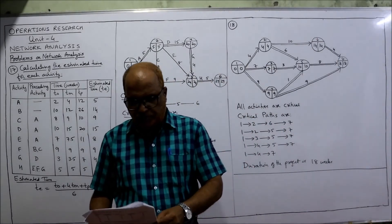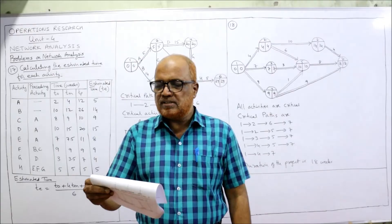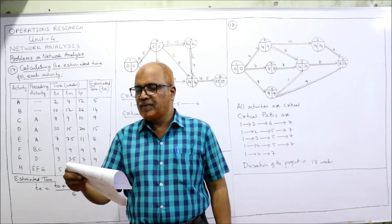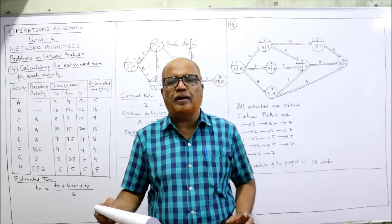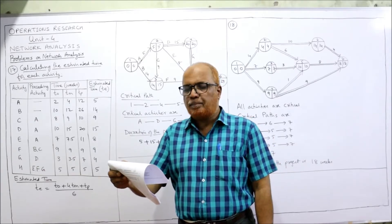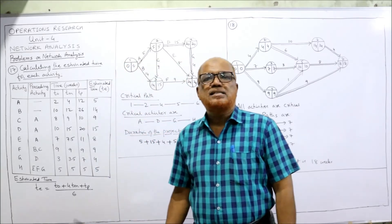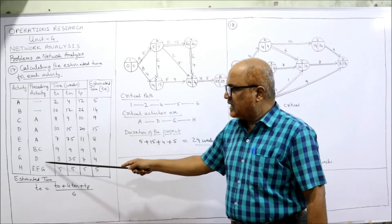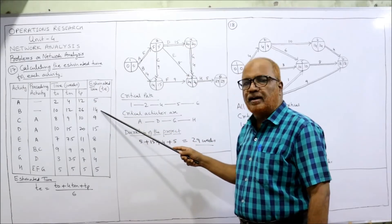Now see the 17th problem. A small project consisting of eight activities has the following characteristics: activities A through H, preceding activities, and time estimates given — most optimistic (to), most likely (tm), and most pessimistic (tp). We have to calculate the estimated time te, draw the network diagram, and determine the critical path. No probability calculation is required.